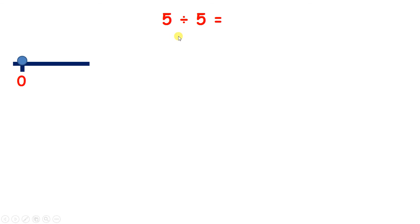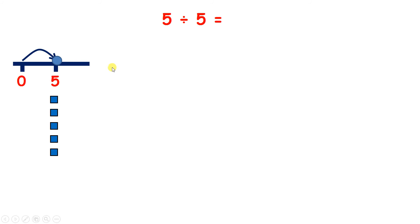So now you should be able to tell me very quickly: what is 5 divided by 5? Well, any number divided by itself is 1, because 1 jump gets us to 5, or if we start on 5, 1 jump back gets us to 0. So 5 divided by 5 is 1.